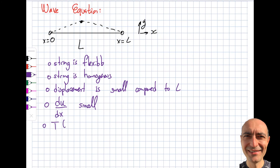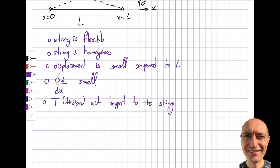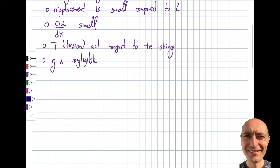Tension, which I'll call T, acts tangent to the string. This is reasonable because it's all associated with movement that is perpendicular — the transverse vibration. I'm also ignoring the effect of gravity; g is negligible. The acceleration from T will be much higher than gravity, so I can go ahead and neglect gravity.